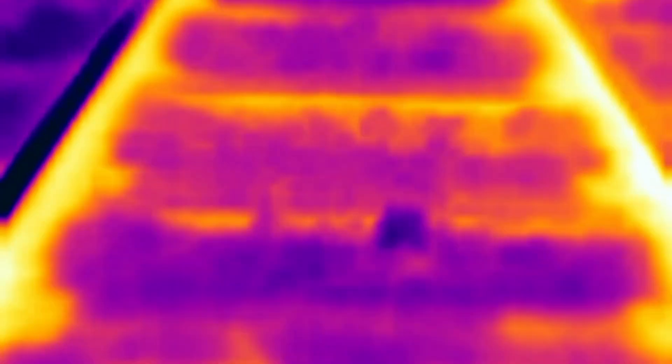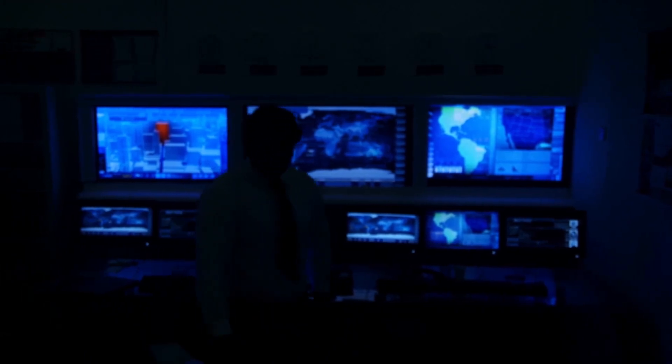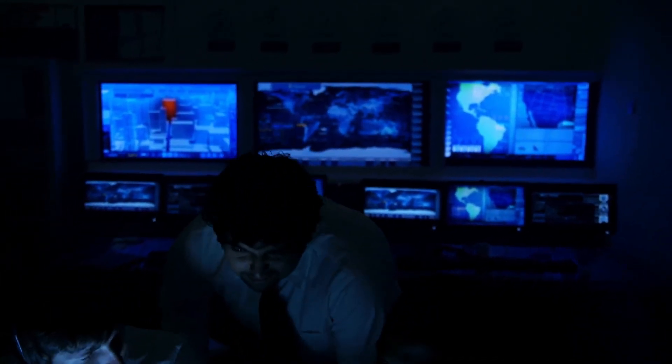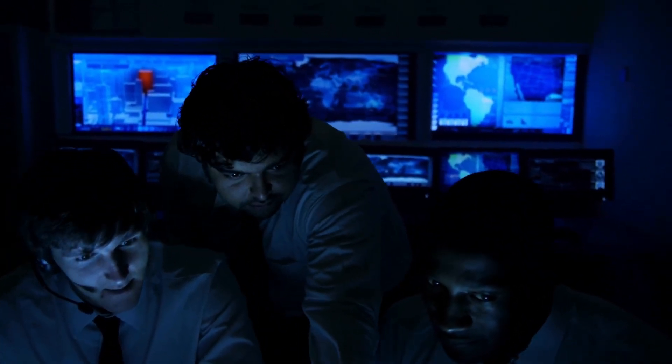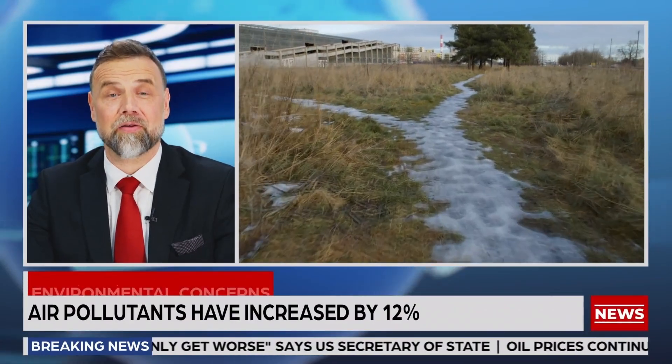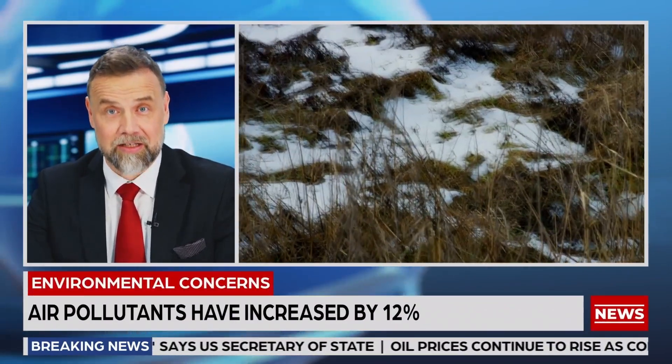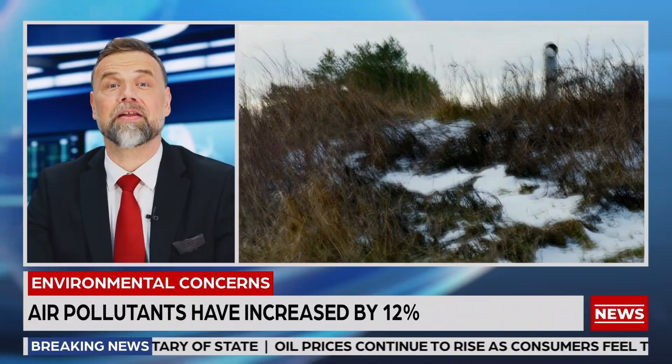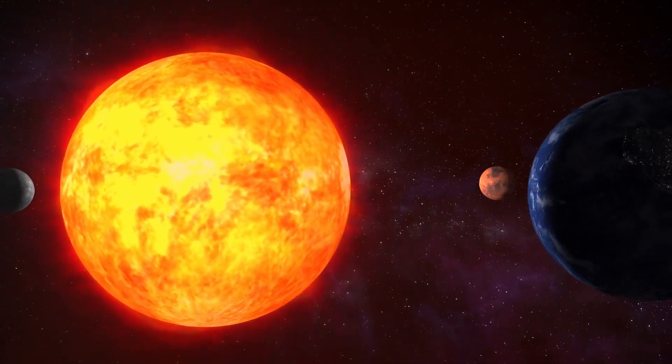Proxima Centauri b is constantly bombarded with high-energy ultraviolet radiation far stronger than what reaches Earth. These flares are so powerful that even lightweight molecules like hydrogen, nitrogen, and oxygen can be stripped away.